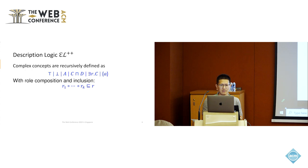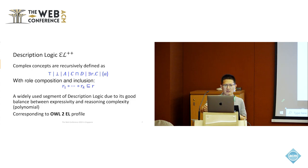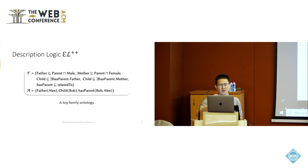In this work, we focus on the fragment of EL++. This is the formal definition of EL++. Given a signature of named concepts, named roles, and named individuals, we can recursively define complex concepts with top, with bottom, with conjunction, with existential quantification, and with nominal, which is to define a concept with one specific individual. It also allows role composition and role inclusion. Why we consider EL++? Because it keeps a good balance between expressivity and reasoning complexity. It is widely used in all kinds of ontologies and has polynomial time complexity in reasoning.